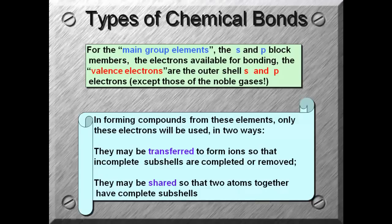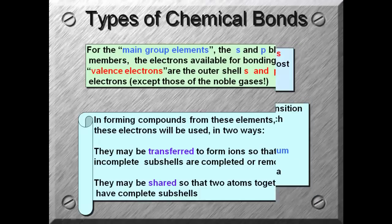And they can be used in one of two ways. They may be transferred to form ions so that incomplete subshells are completed or removed, or they may be shared so that two atoms together have complete subshells. Two different ways that electrons are moved around to form stable octets. These will be two different bonds that form.